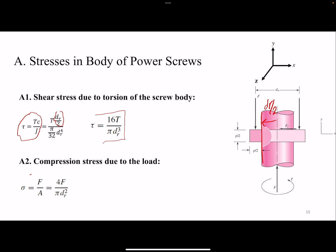For the compression, simply it's F over A, and if you want to observe the sign as well, there should be a negative here, and A is π over 4 dr squared. So at the end we get this equation. So these are the two stress values for the stresses that the body of the screw experience.